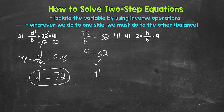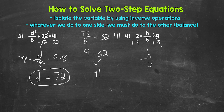Lastly, let's move on to number 4, where we have 2 equals h divided by 5 minus 9. The variable is on the right side of the equation — a little different look, but we use the same exact process. We need to isolate that variable h. h is being divided by 5 and then we are subtracting 9. So let's undo that subtraction first — the inverse operation of subtraction is addition. So let's add 9 to the right side of the equation, which means we add 9 to the left side as well. On the right side, subtracting 9 and adding 9 cancel each other out.